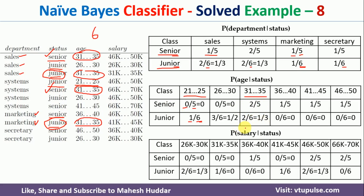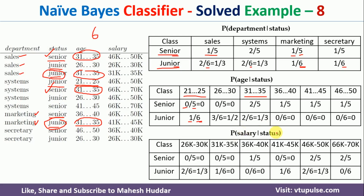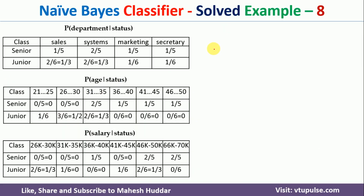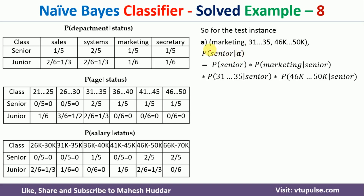Similarly, we calculate the probability of salary given status — the contingency table for salary given status is built in the same way. Once we have all prior and conditional probabilities, we can classify the new example. To classify example A — department marketing, age 31 to 35, salary 46k to 50k — we need to calculate probability of senior given A and probability of junior given A.